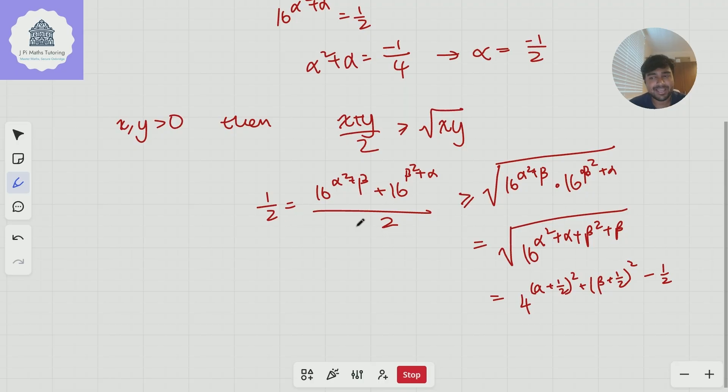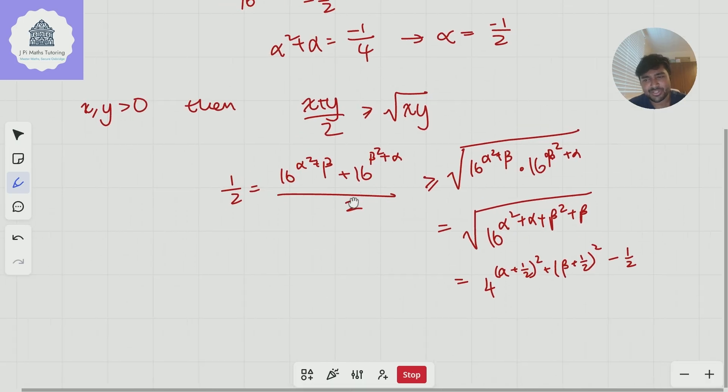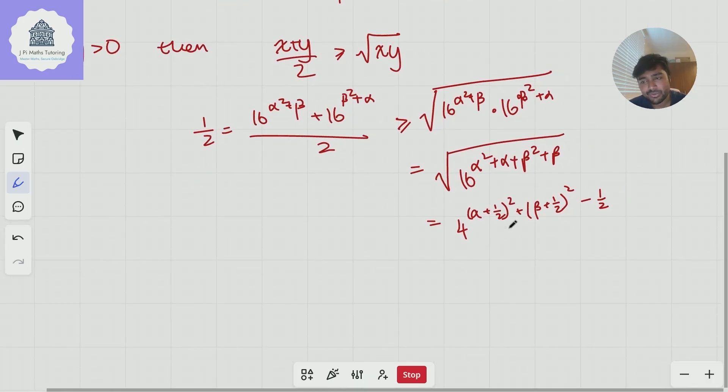So I've got four to this power is less than or equal to a half. Actually, we should notice something here, because this thing here is always at least zero, because it's the sum of two square numbers. And then I'm subtracting a half. So all in all, the power of four is at least negative a half. And if we think of a graph of 4^x, it looks like this.